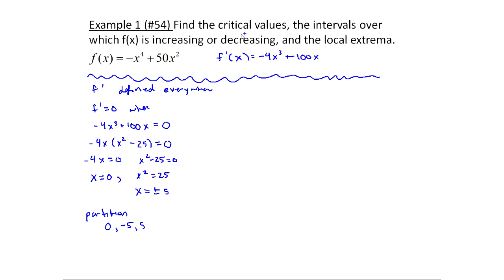The critical values are zero, minus five, and five. These are points where the function is changing. It's possible to have a partition number that, when plugged into f, is undefined — so it wouldn't be a critical value and wouldn't be a candidate for a local max or local min. Maybe there's an asymptote there instead.